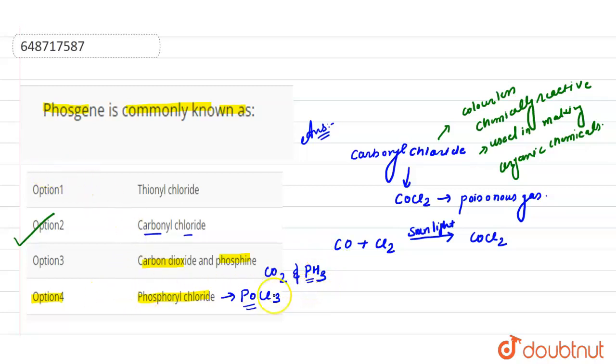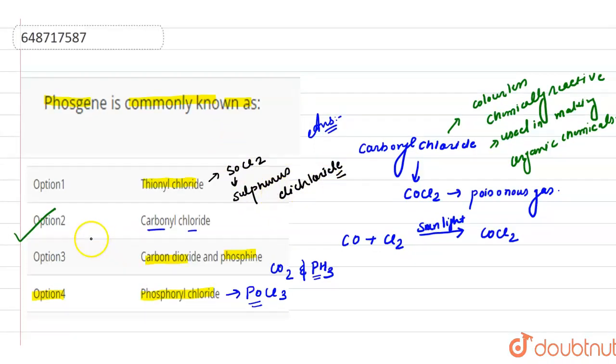And this is also not called as phosphine and if we see our option 1 that is thionyl chloride that is SOCl2. SOCl2, the iopic name for this it is a sulfurous dichloride, it is sulfurous dichloride. So, this is also not the correct option for this question. So, option 2 is correct answer. Thank you.